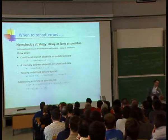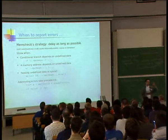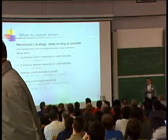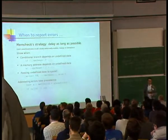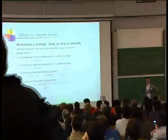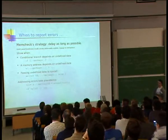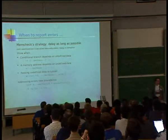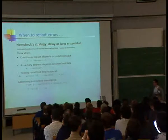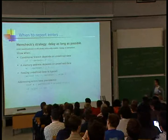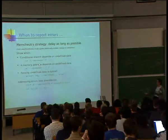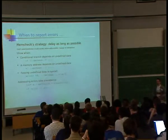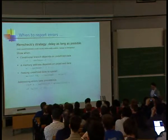Essentially, Memcheck will complain whenever the use of an uninitialized value would possibly cause an exception. So, either it would cause a memory address to be undefined, the address of a location, not the contents of that location. Or when you would effectively write an undefined value into the program counter by jumping to, jumping on uninitialized value, or when you're passing garbage to the kernel. These are really the only places where Memcheck is going to complain. And particularly in this kind of situation, the point at which it complains can be a long time after the garbage is created.